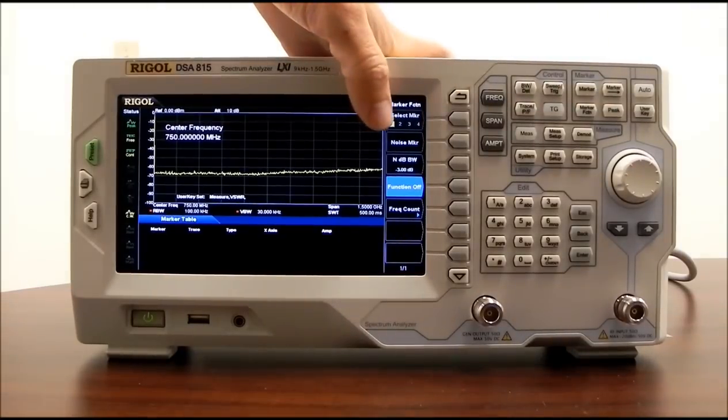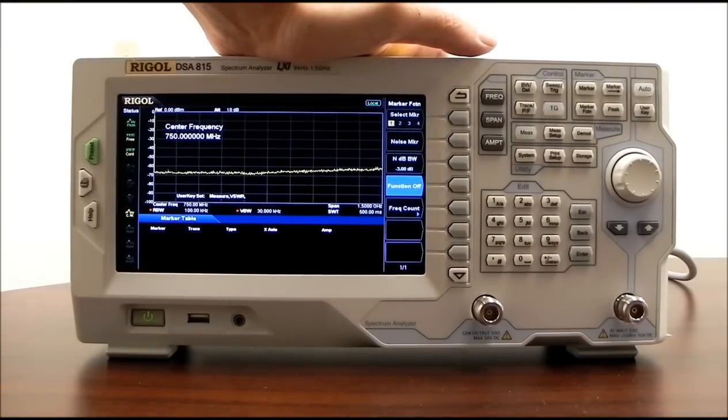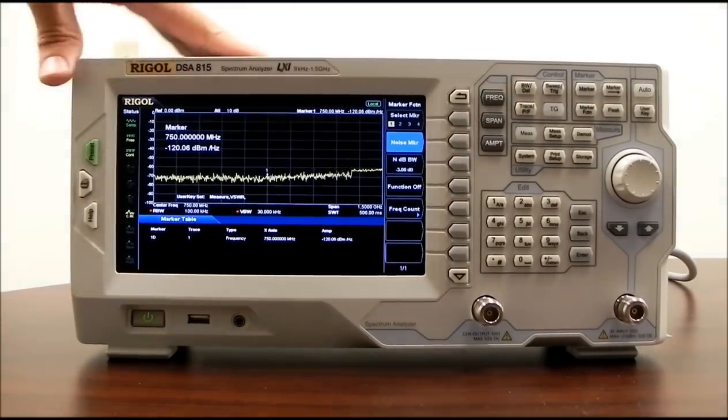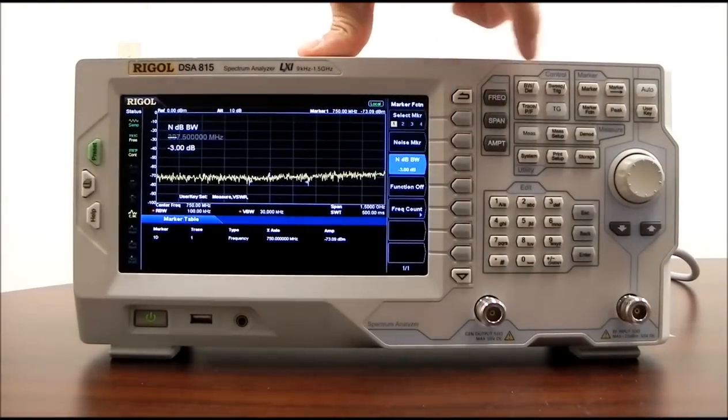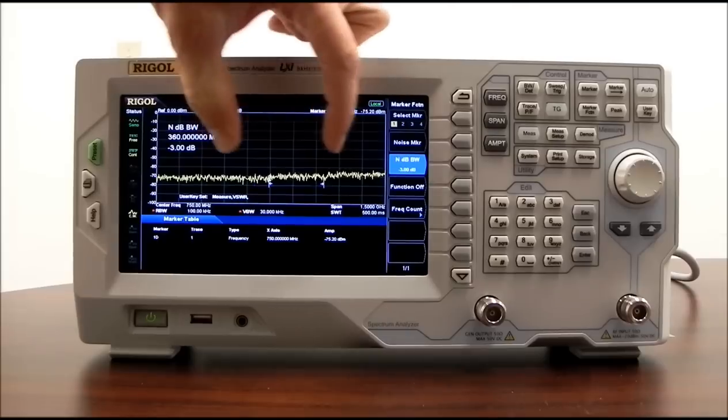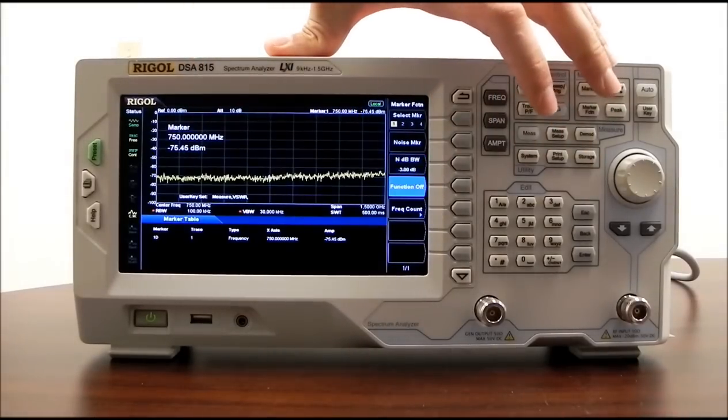Marker function, we have noise markers which are going to be able to give us the value for the noise at a particular level. So dBm per hertz. We can select the bandwidth. And you can see the bandwidth is then indicated on the display. We can turn that function off, of course.